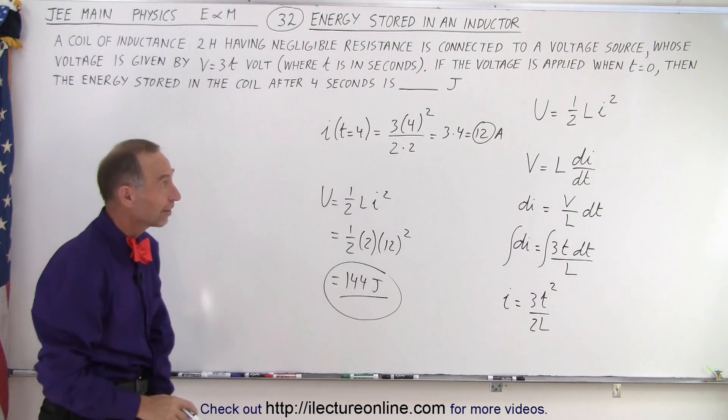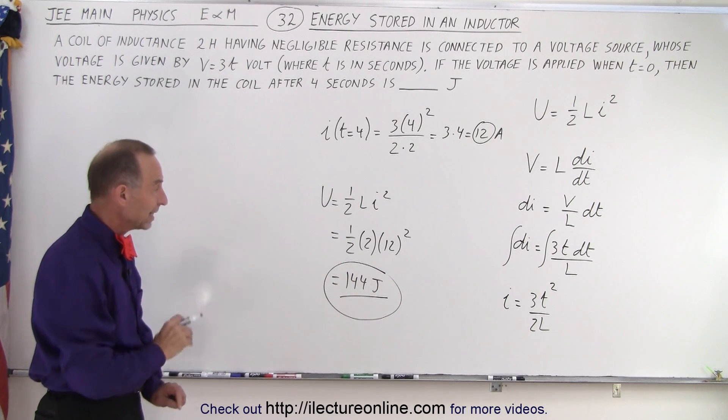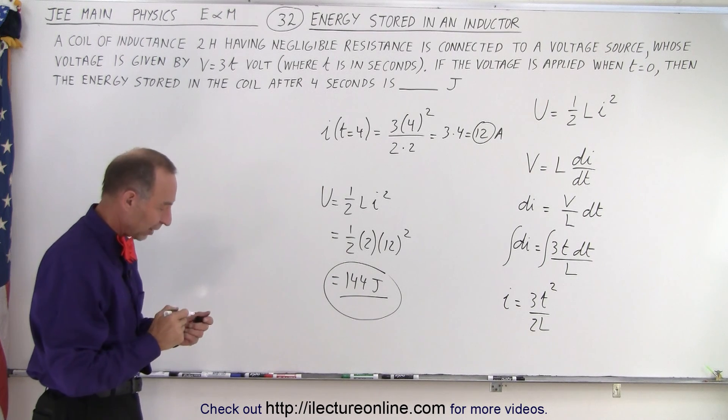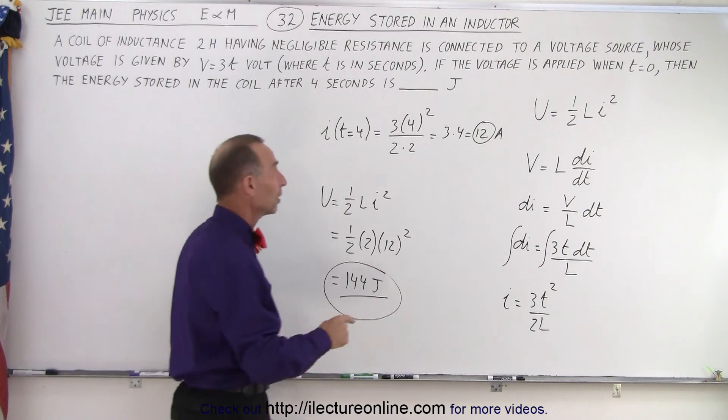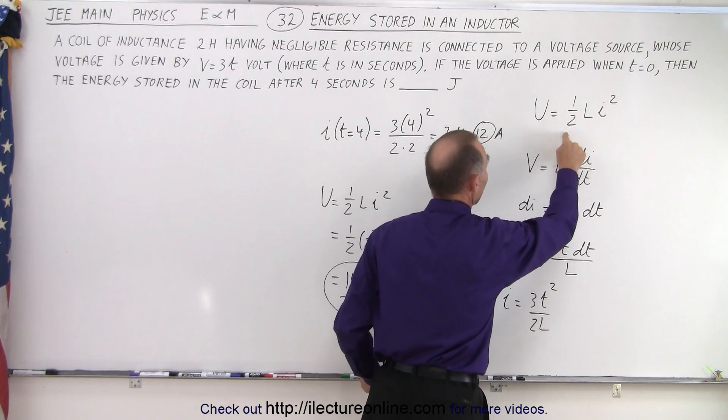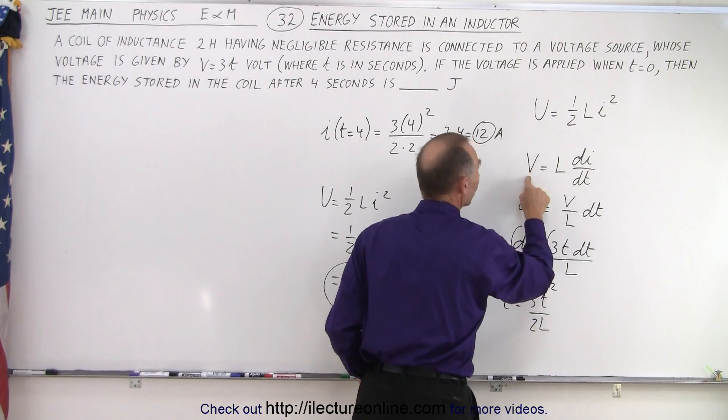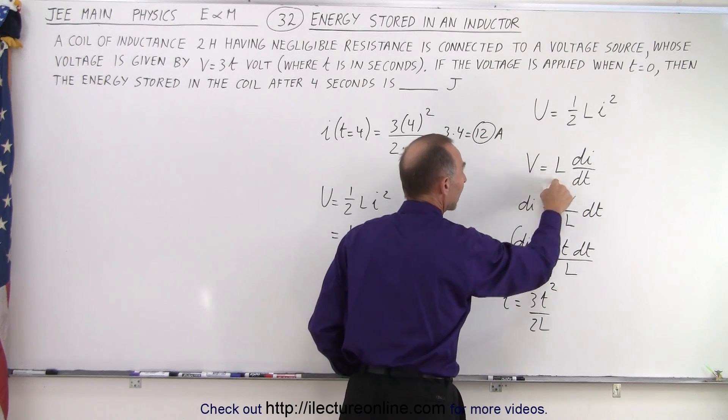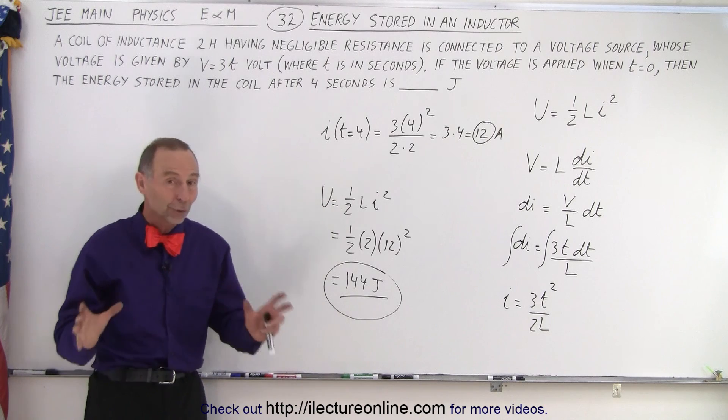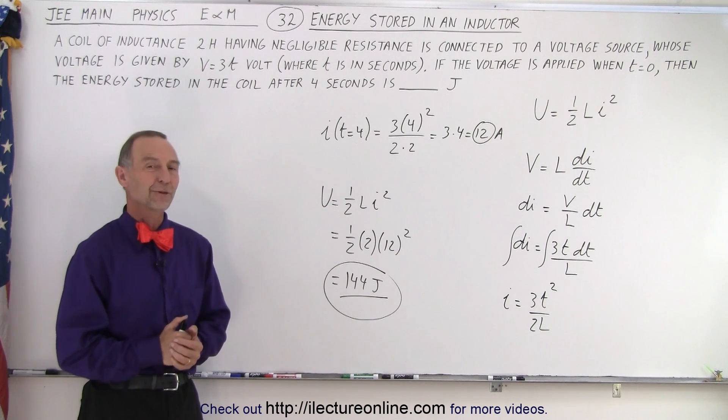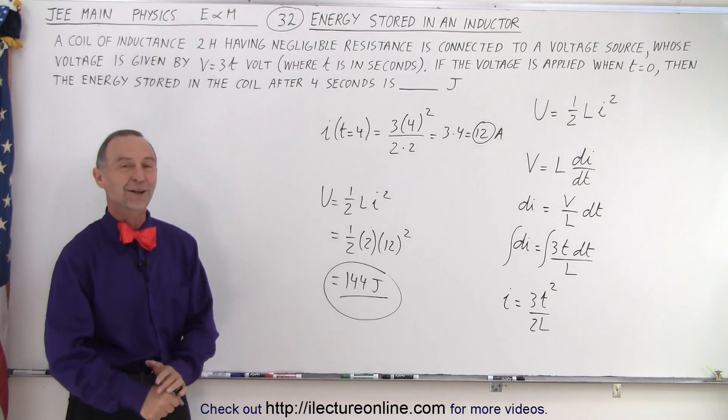And that is how we find the energy stored in the inductor after four seconds. So you can see that this is relatively straightforward. Again, if you remember the two equations—that the energy in the inductor is one-half LI squared and that the voltage across the inductor is equal to L times the rate of change of the current with respect to time—if you know those two equations, the rest is pretty straightforward, and that is how it's done.